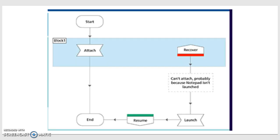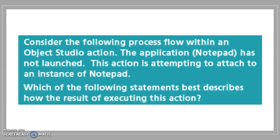Here you can see a process flow diagram. Without Notepad in the block, it is attached, and it recovers through Recover and Resume. Cannot launch, probably because Notepad is not launched. If Notepad is launched, it has to recover through the Recover and Resume stage. So what is the issue with this design? Notepad has not launched — the issue is Notepad has not launched. The action is attempting to attach to an instance of Notepad.